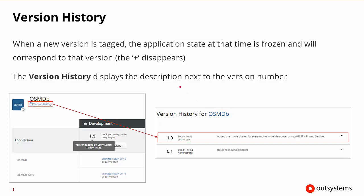Once we've done that, as we're tagging the different versions of the application, each of those versions becomes a frozen state or a frozen package of that code at that given time. The plus sign will disappear because it will become the latest and newest version. If we wish to see the version history at any given time, we can go to our application and click on version history. It will show the most recent version at the top with all previous versions below — for example, a 0.1 version upgraded to 1.0.